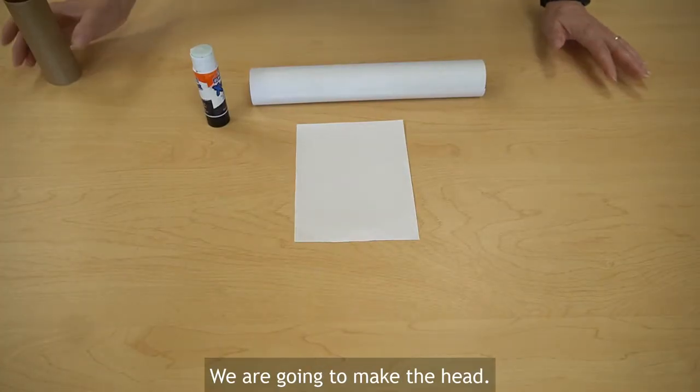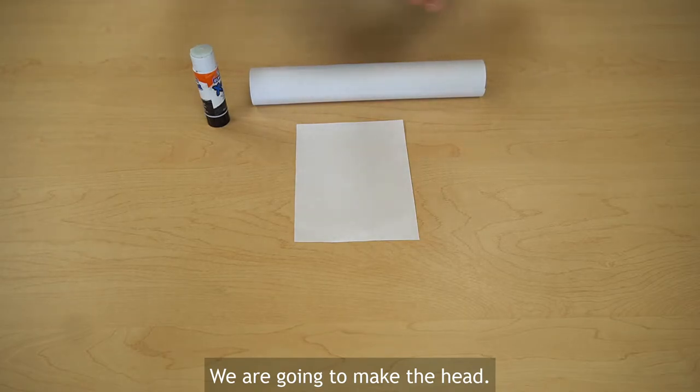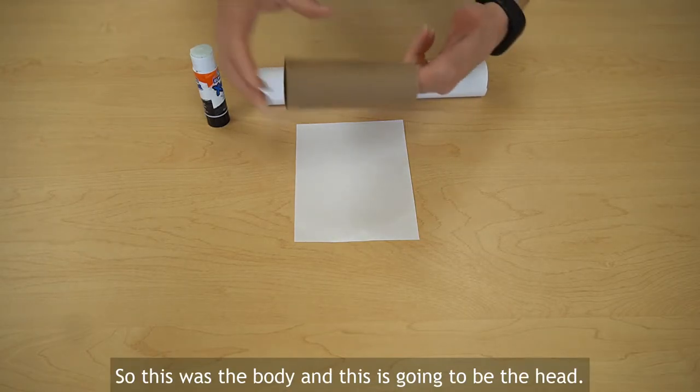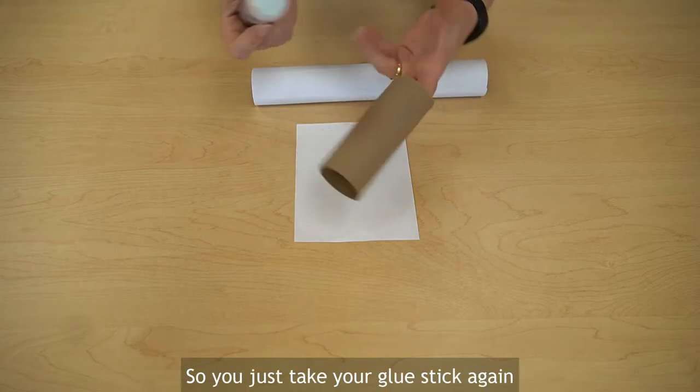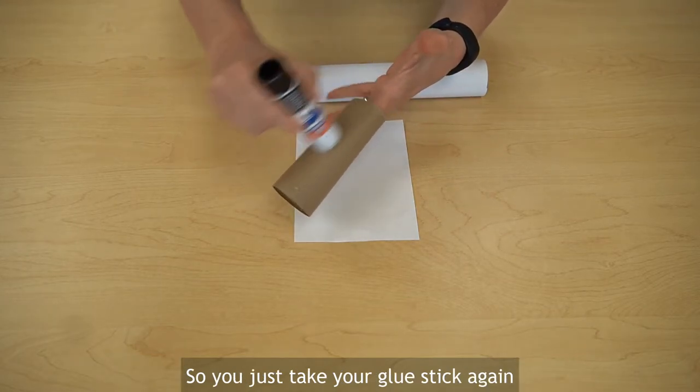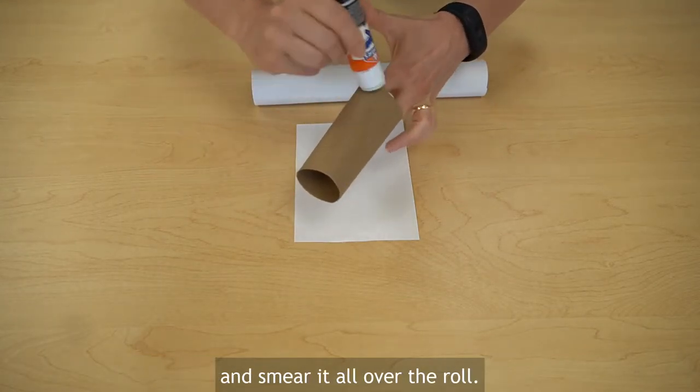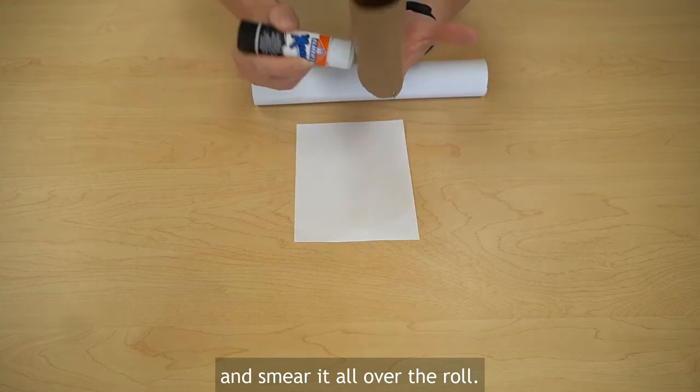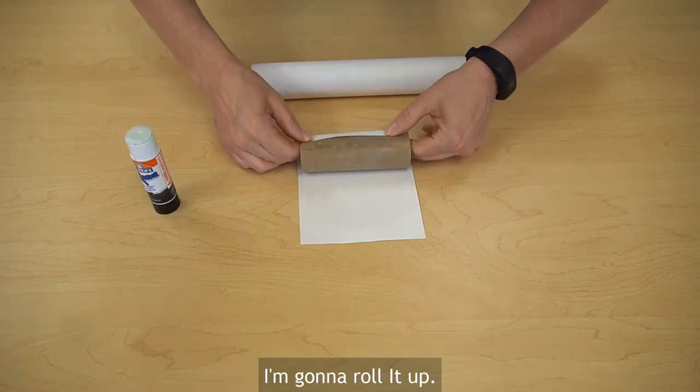In step two we are going to make the head. So this was the body and this is going to be the head. So you just take your glue stick again and smear it all over the roll and we're gonna roll it up.